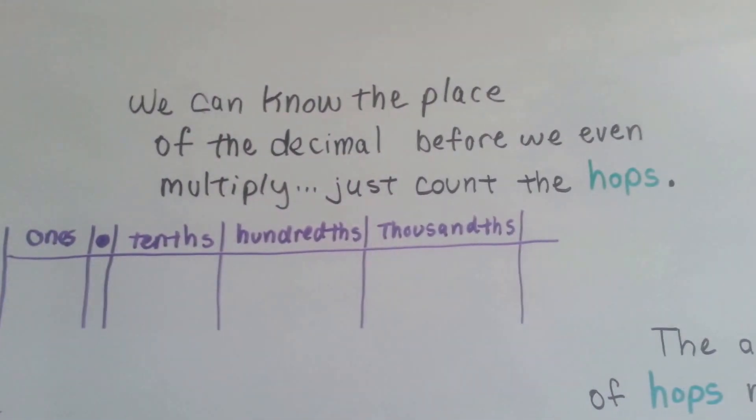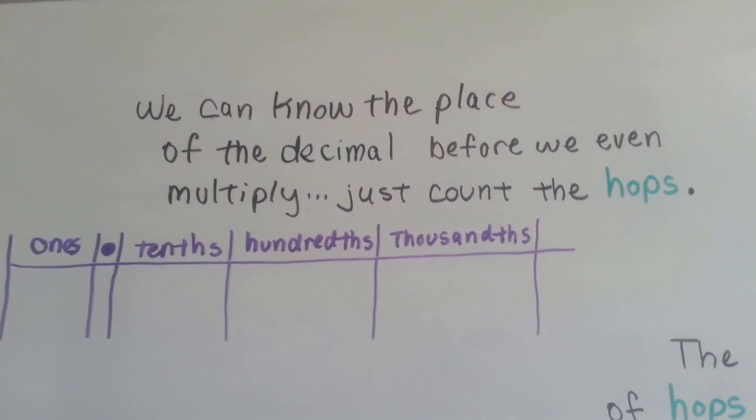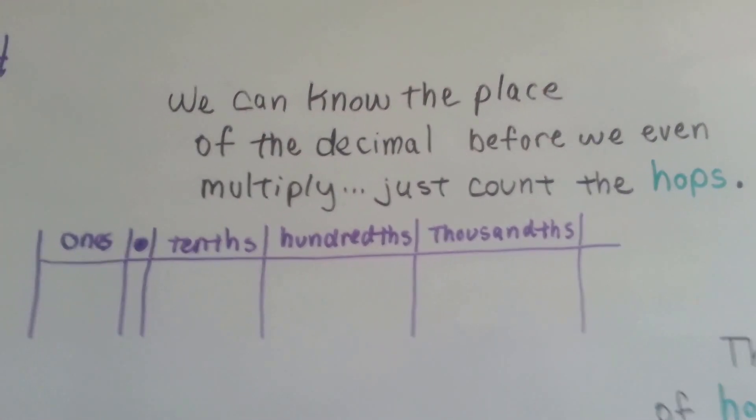We can know the place of the decimal before we even multiply. We just count the hops.